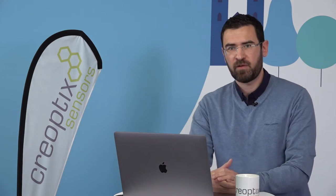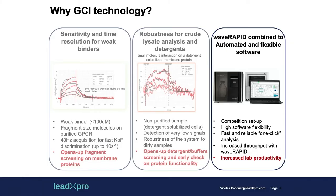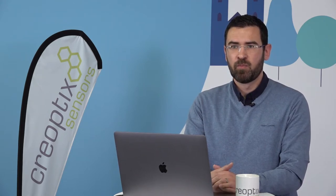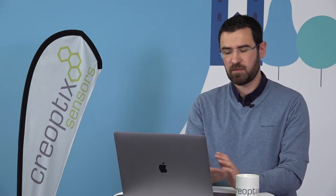There are a couple of other features of this instrument that are also very useful for us. In the middle of the slide, you can see the robustness for crude lysate analysis — that means we can actually work with non-purified samples. This is quite important for us because it saves time when we try to screen for solubilization conditions of membrane proteins, for example. It really opens up the way for detergent buffer screening and early checks on protein functionality. And of course, an important point for this presentation is the new development of the WaveRapid combined with automated and flexible software, which, as I will present in the second part, allows us to increase our lab productivity.